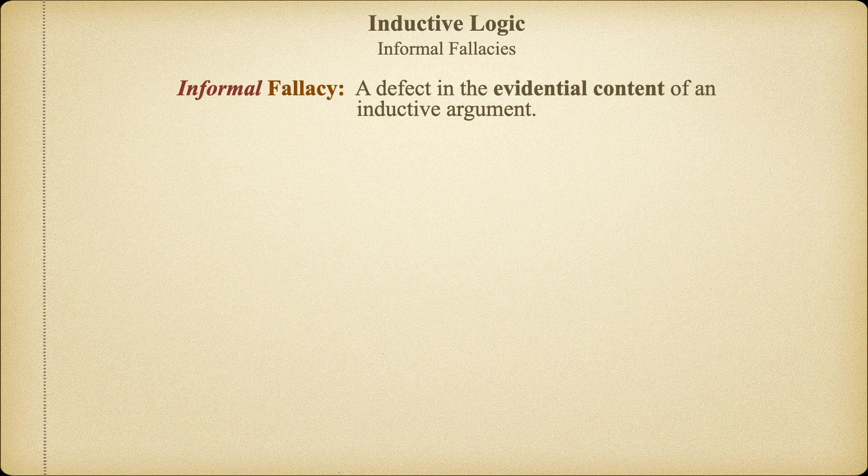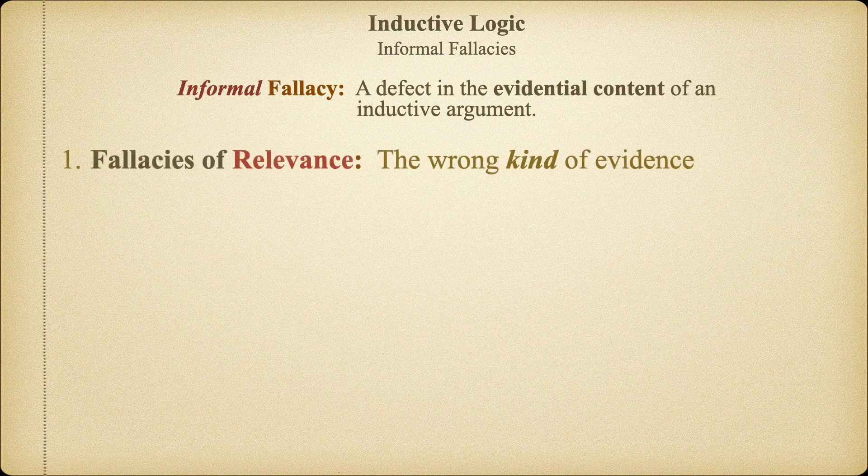Given that there are no formal rules that govern induction, there are a myriad of ways for our inductions to go wrong. But we generally recognize four distinct kinds of defects in the evidence of inductive arguments. The first group of informal fallacies all have to do with the relevance of the evidence contained in the argument. We call these defects fallacies of relevance.